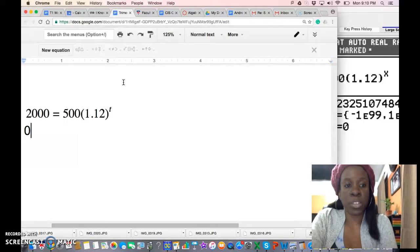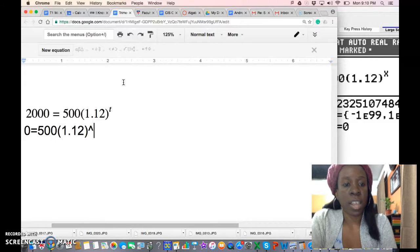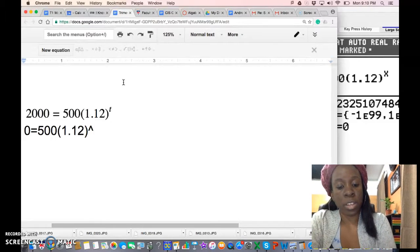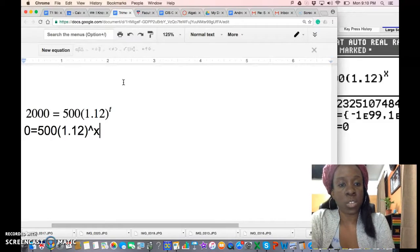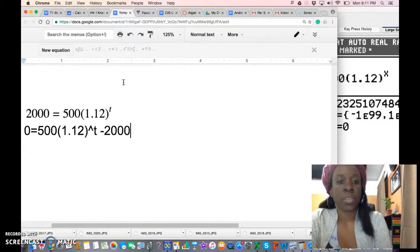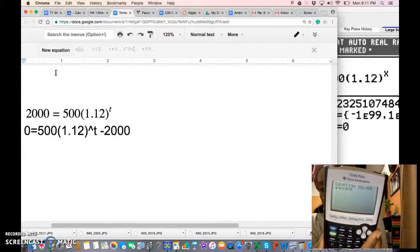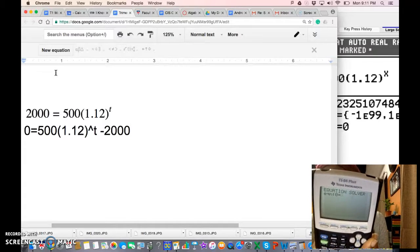If you do that, we have zero equals five hundred times one point one two to the x, or to the t, let's use t, minus two thousand. So I've taken two thousand away from both sides just because in the TI-84, the older version, it has to be equal to zero.